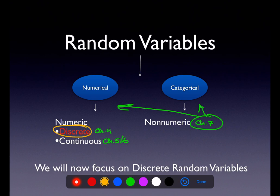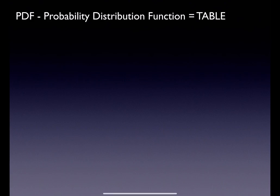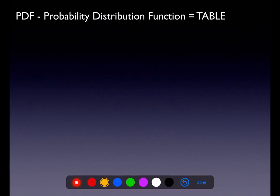For right now we're going to look at the discrete type — making tables for our PDF, and then the special case: the binomial. If you hear me talk about a PDF, that stands for probability distribution function — the P, the D, and the F. Most of the time we make a table, but you could also make a histogram.